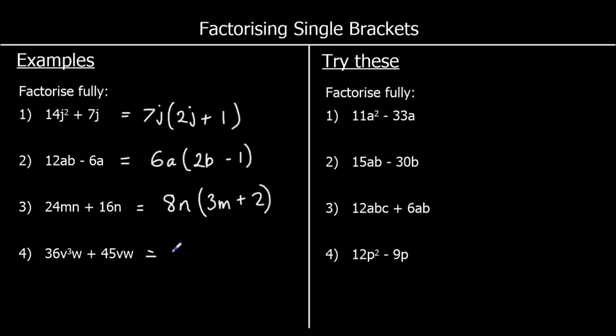Question 4: we've got 36v cubed w plus 45vw. 36 and 45 are both in the 9 times table, and v cubed w and vw both have vw in them, so we take 9vw outside the bracket. 9 times 4 makes 36. Now, what do we multiply vw by to get v cubed w? Since vw means v times w, and v cubed w means v times v times v times w, we need to multiply by v squared.